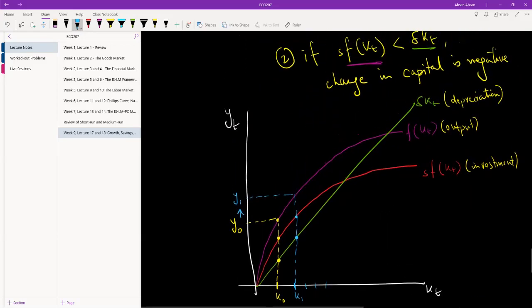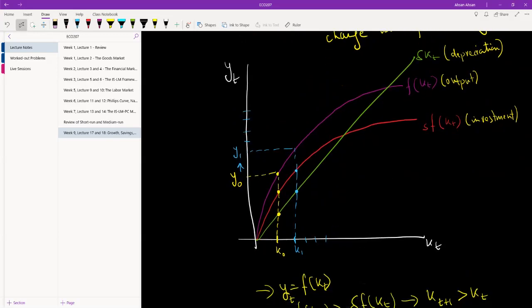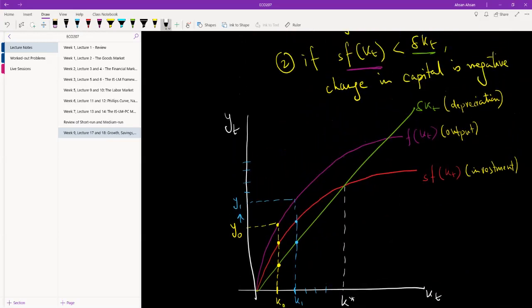And so on and so forth. We're going to keep moving from here to here to here. And of course, our output is also going to keep going up all over the place until we arrive at this place. We're going to call this k star. Of course, our total output is this. We're going to call this k star.